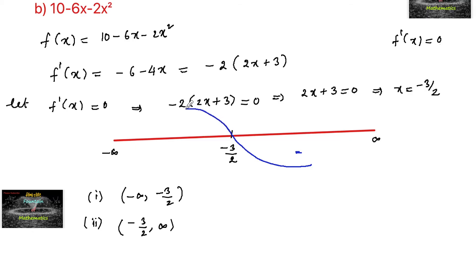The curve then turns to the positive side. By the wavy curve method, from negative infinity to minus 3 by 2 the function is increasing, and from minus 3 by 2 to infinity the function is decreasing. The wavy curve method is explained in the description link — please go through it for a good understanding.